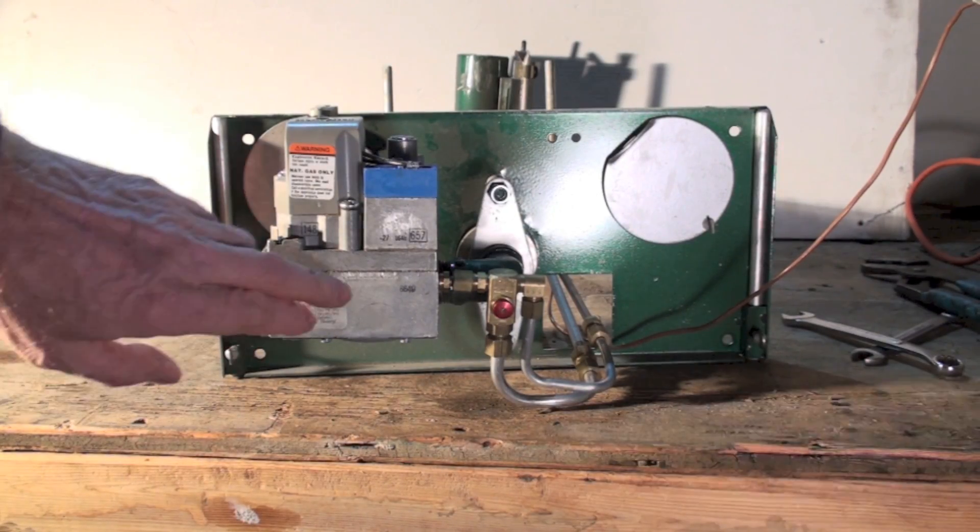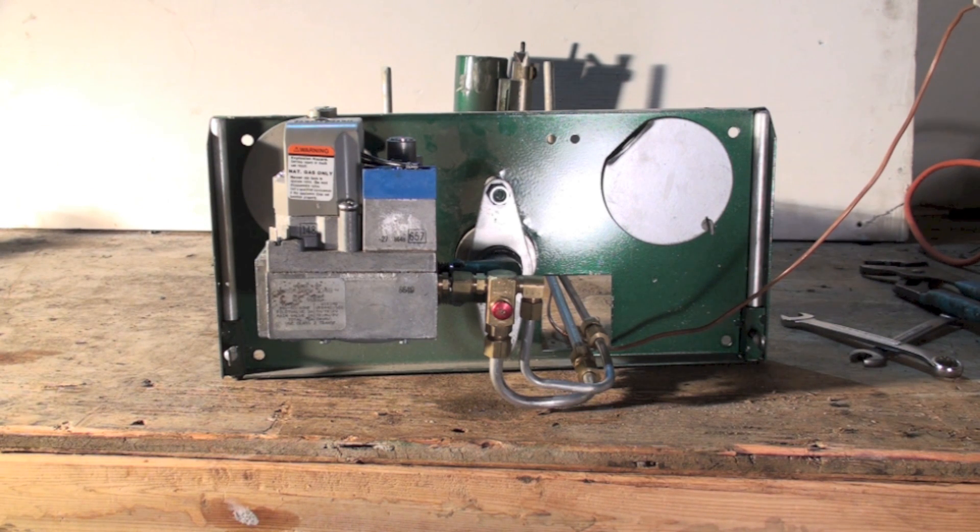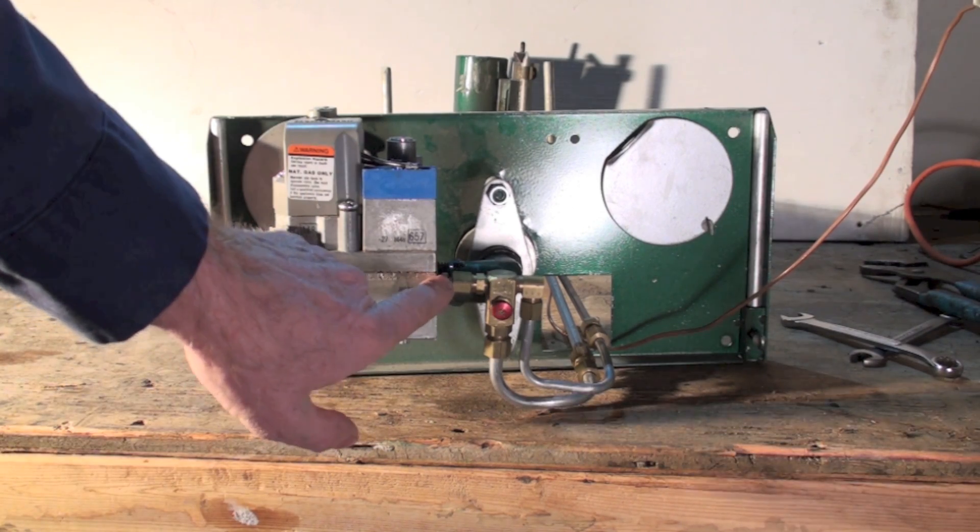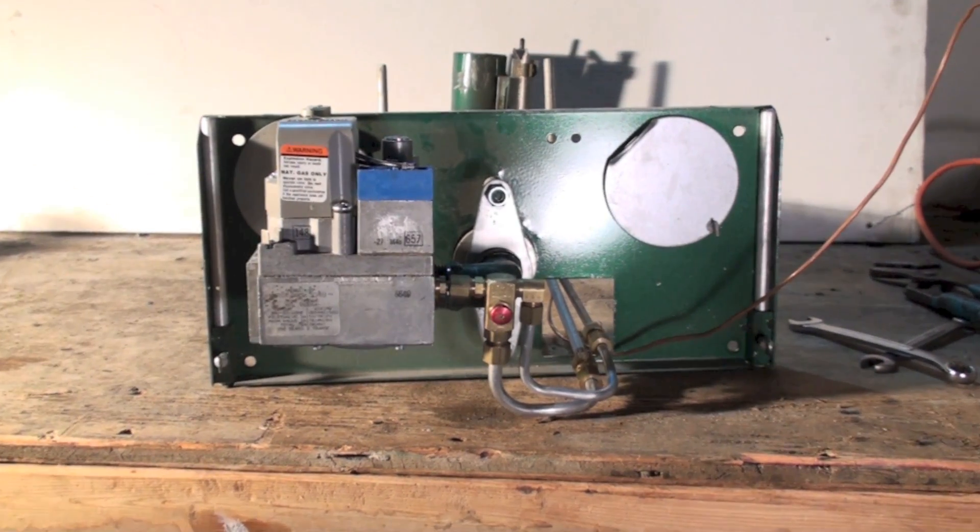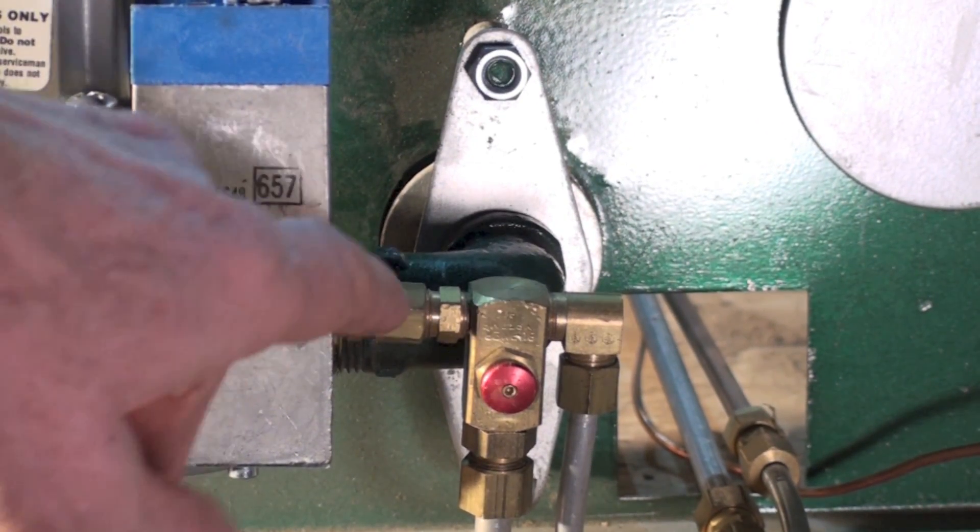You can see I've replaced the gas valve with the gas valve that comes with the kit for the spark igniter because you can't use the old gas valve. But the pilot assembly and everything is still here. I've left most of those parts still on.